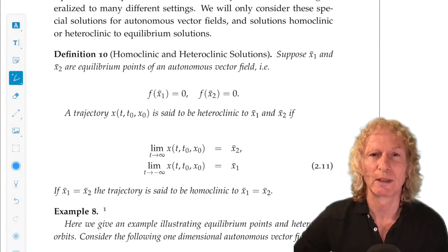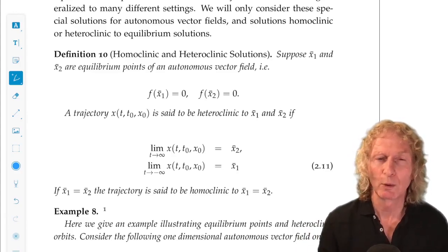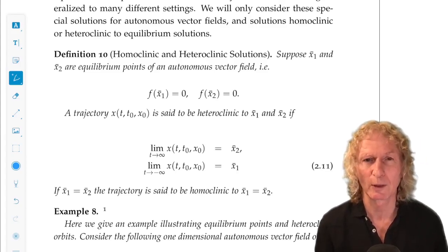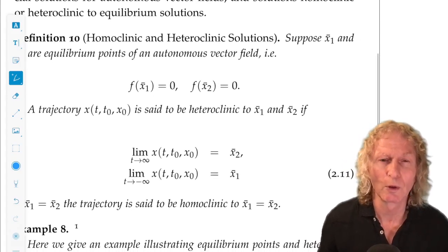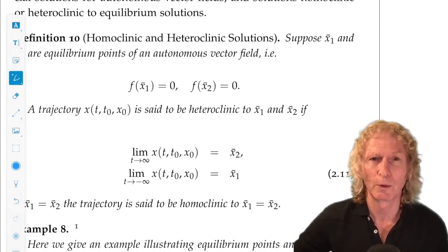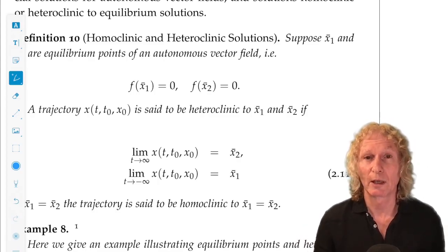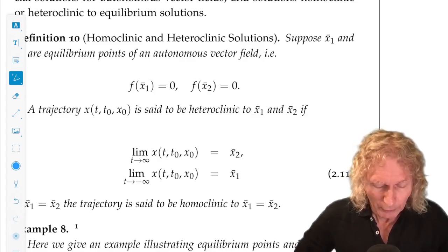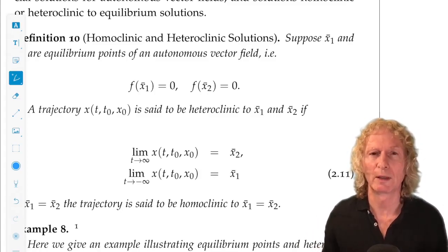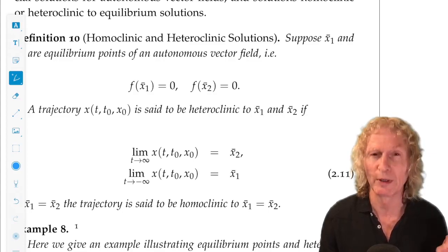Okay, homoclinic and heteroclinic solutions. This is a big subject. For equilibrium points and periodic solutions, they had a fairly clean definition for both autonomous and non-autonomous systems. I'm going to restrict myself to autonomous systems to discuss this concept. It's a little bit tricky in the non-autonomous case, although it can be discussed in that case. Also, well, let's first talk about heteroclinic and homoclinic solutions associated with equilibrium.